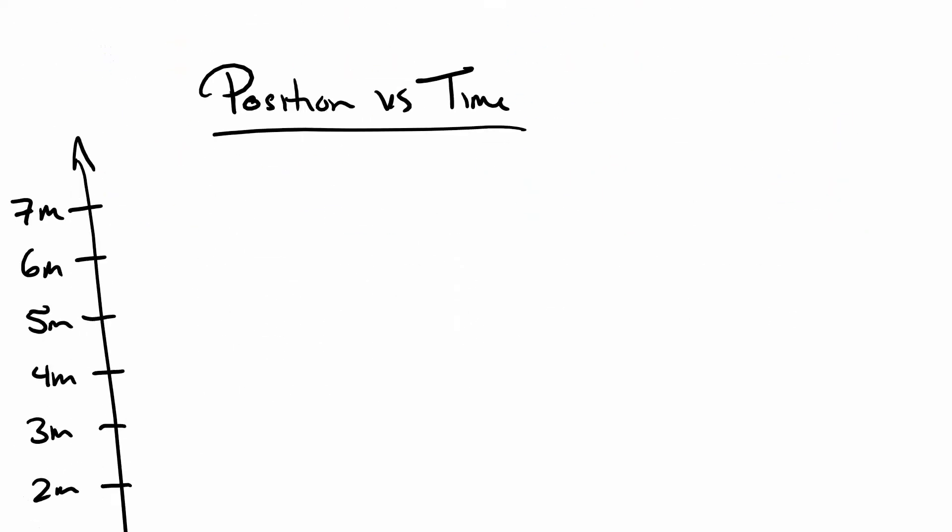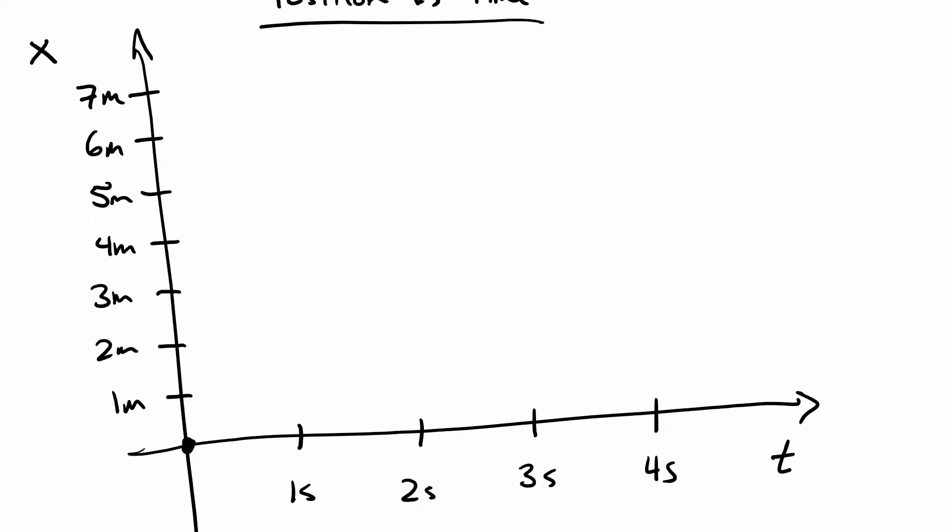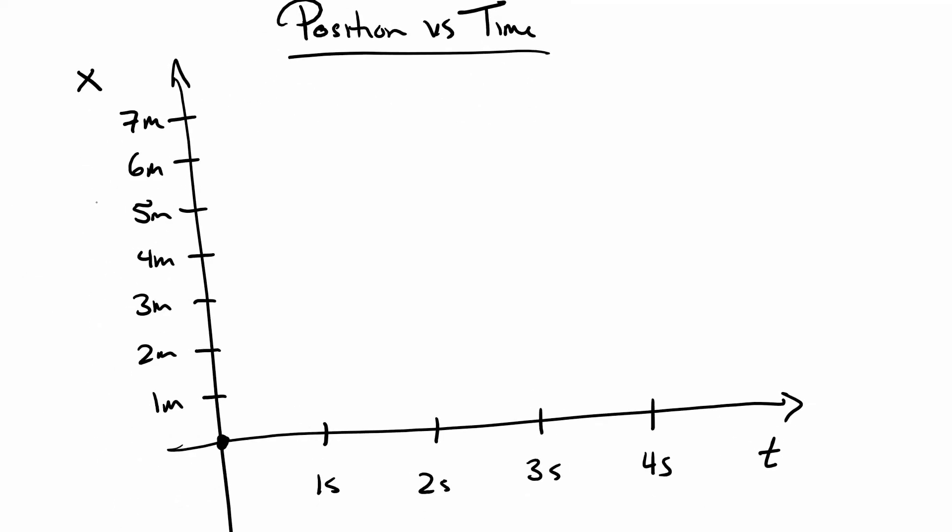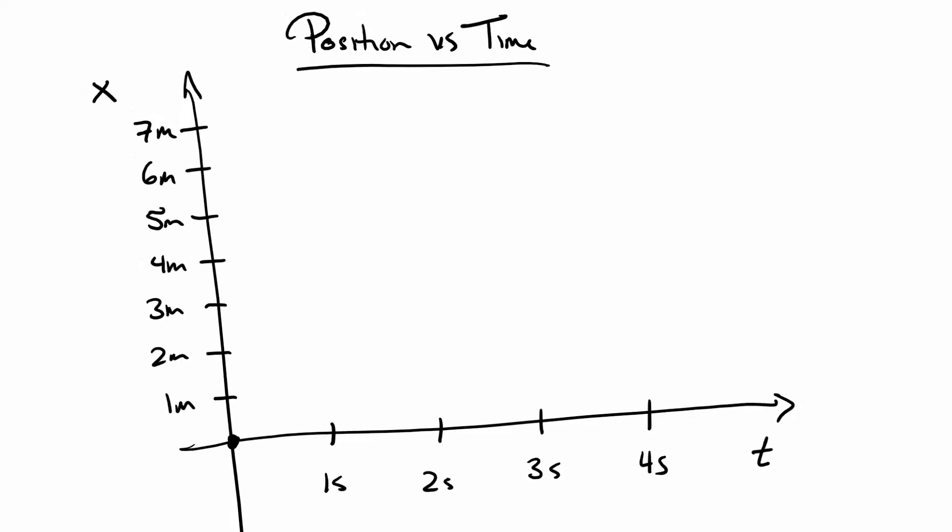So we want to be able to make a position time graph from this. Sometimes this will be called a distance time graph. Position is what I'm going to usually use. We have x on our y-axis and t on our x-axis. Position on our vertical axis, time on our horizontal axis. You want to get away from using x and y because we need to be able to be a little more flexible in things.